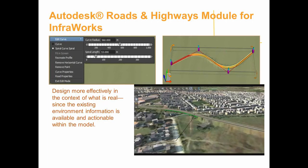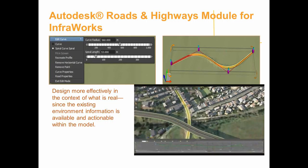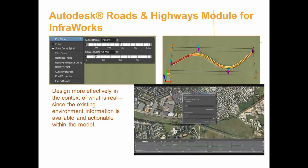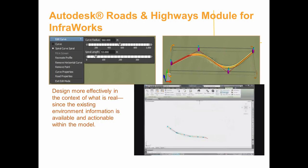Infoworks 360 also contains several additional modules. One of the key ones we'll be looking at today is the Road and Highways module. This helps civil engineering professionals work on transportation projects, explore preliminary design options, and optimize project performance by more efficiently engineering roadway geometry in the context of the existing environment.